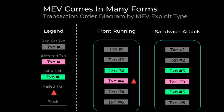For example, say this is an NFT auction and based on the miner's algorithms the result of this auction would be quite profitable. The miner identifies the transaction, increases the gas price, and puts their own transaction in front of the genuine transaction in the mempool. As a result, their transaction gets executed faster and they win the auction. This approach is called front-running — you manipulate the order and put your transaction in front.